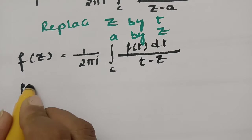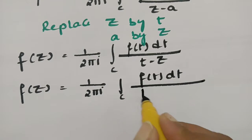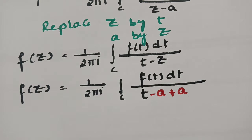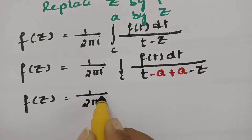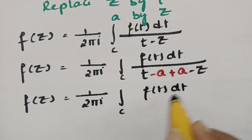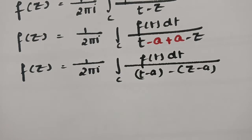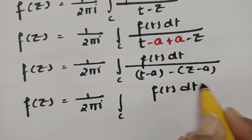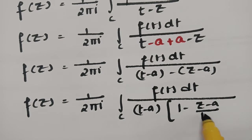In the next step, f of z is equal to 1 by 2 pi i integral c f of t dt by. In between t and z, I am introducing minus a, and in order to balance, I am writing plus a, and minus z. So adding and subtracting a between t and z. Then f of z equals 1 by 2 pi i integral c f of t dt by, so this can be written as t minus a. If I take minus common, this will be z minus a, and then taking t minus a common gives 1 minus z minus a by t minus a.